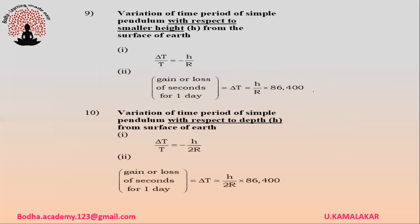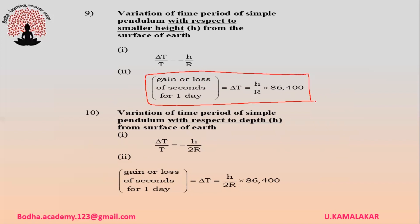Variation of time period of a simple pendulum with respect to height from the surface of the Earth. If a simple pendulum is taken above the surface of the Earth to a height h, the gain or loss of seconds for one day is given as (h/R) × 86400 seconds.